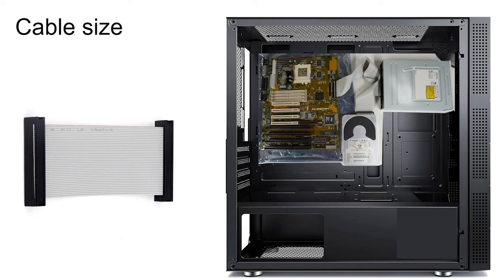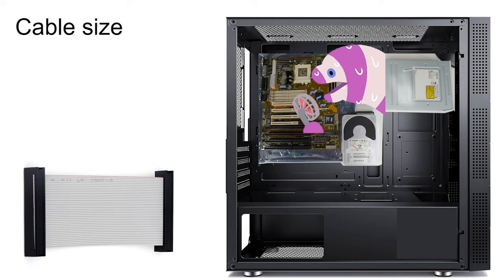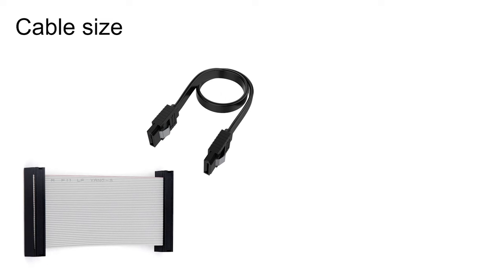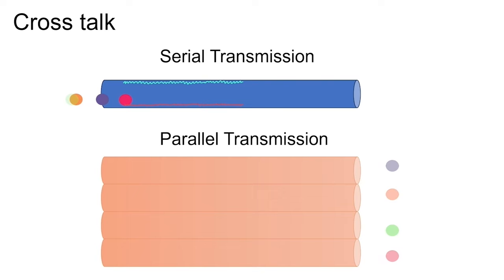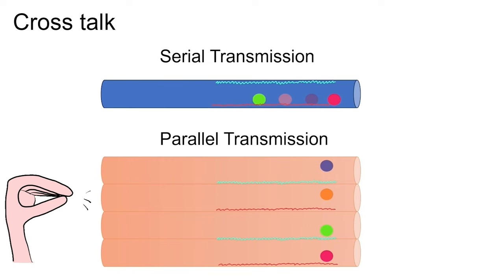Parallel cables are thick and bulky, consuming a lot of space and blocking airflow, trapping heat generated by the CPU and other components inside the cabinet. Serial cables are thin and compact, consuming little space and not blocking airflow. When signals travel over copper wires, they create an electromagnetic field that affects signals in adjacent wires — this disturbance is called crosstalk. On a parallel cable, multiple signals travel side by side simultaneously, creating a lot of crosstalk. On a serial cable, only one signal travels at a time, significantly reducing crosstalk.